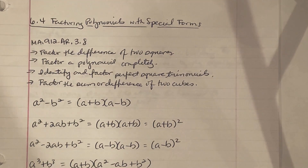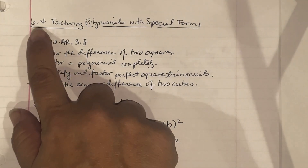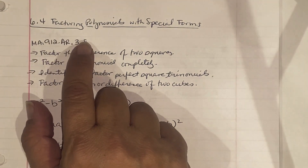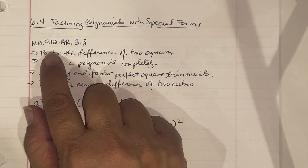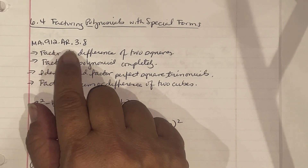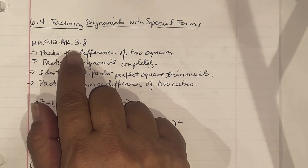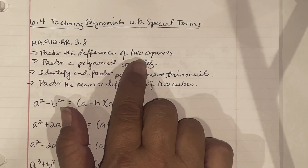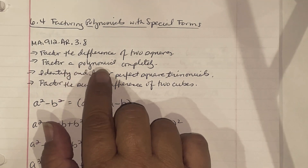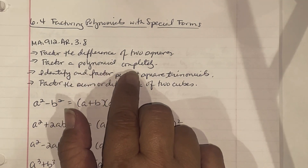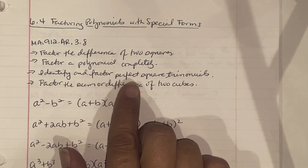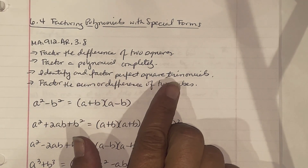This is 6-4, factoring polynomials with special forms. It's MA.912.AR.3.8. We're going to factor the difference of two squares, factor a polynomial completely, identify and factor perfect square trinomials, and factor the sum or difference of two cubes.